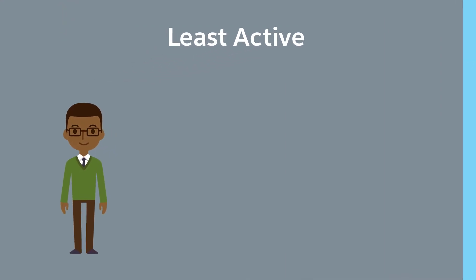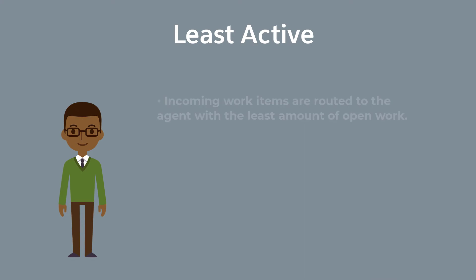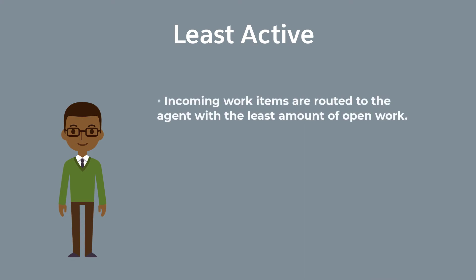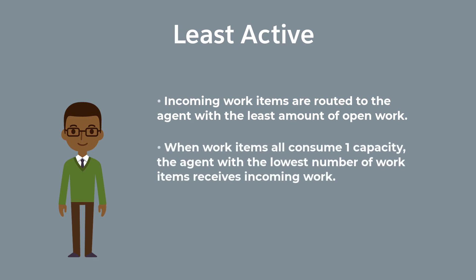With the least active option, incoming work items are routed to the agent with the least amount of open work. When work items all consume one capacity, the agent with the lowest number of work items receives incoming work.